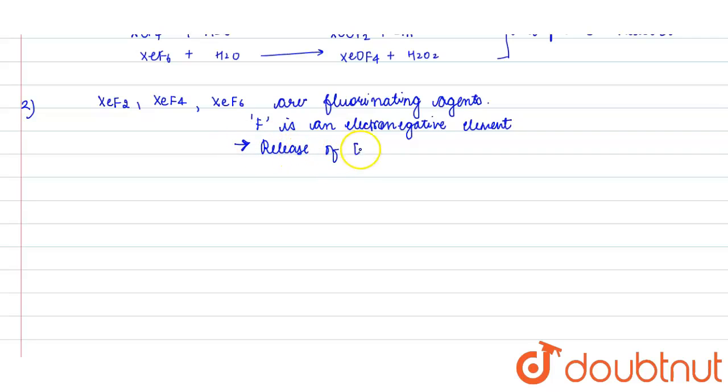The compounds which donate electronegative elements are oxidizing agents because the recipient is reduced. Therefore, XeF2, XeF4, and XeF6 are known as oxidizing agents.